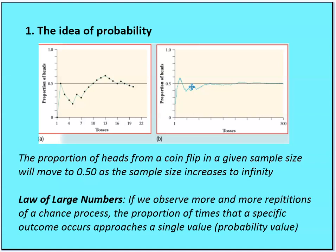The law of large numbers states that if we observe more and more repetitions of a chance process, the proportion of times that a specific outcome occurs approaches a single value, and this is called the probability value.